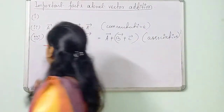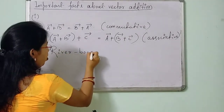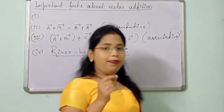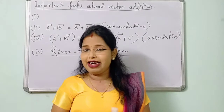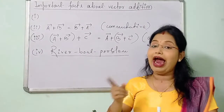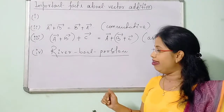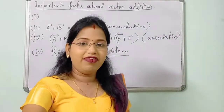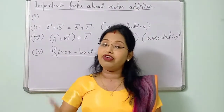The next very important point is the river boat problem. A boat always moves in the direction of the resultant velocity — the resultant of the velocity of the boat and the velocity of the flow of the river. In this type of problem, two cases arise: first, when the boat tends to cross the river in the shortest path, and second, when the boat tends to cross the river in the shortest time.